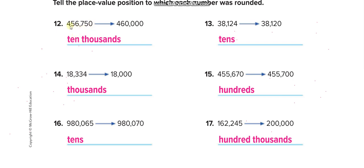In the first example, you see a 4 became a 6, so count: ones, tens, hundreds, thousands, ten thousands — it was rounded to ten thousands. In another example, the last digit became zero and it was less than 5, so the digit stays the same — they rounded to tens. In the next one, the 8 stays the same because the next number, 3, is less than 5 — they rounded to the hundred thousands place. Try the remaining three by yourself.